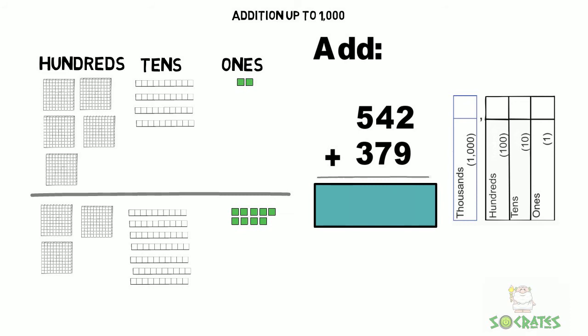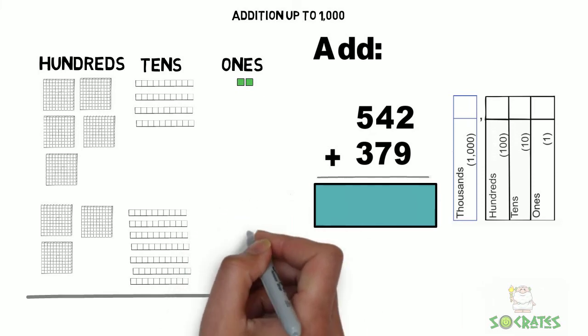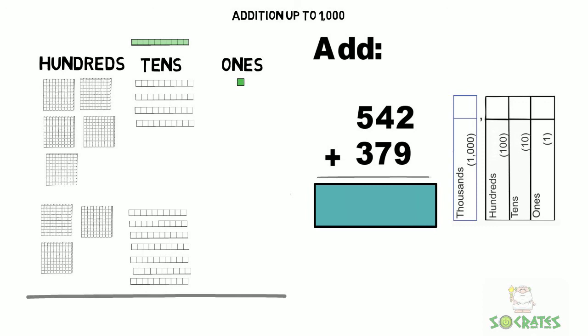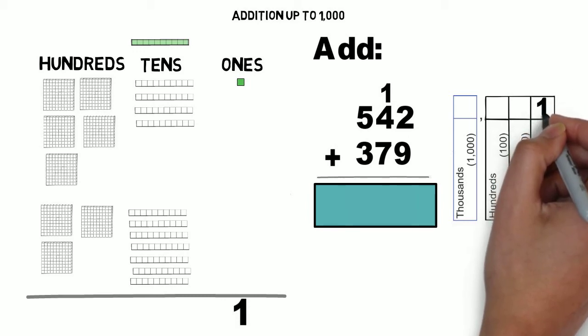We're going to take the ones and count out 10 of them, then move a ten above the tens column. So we put a 1 on our math problem. We have 1 left over.